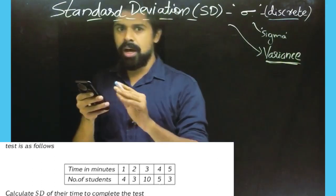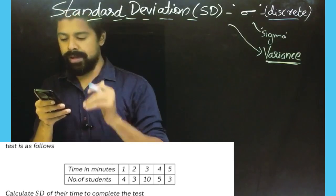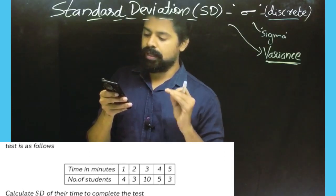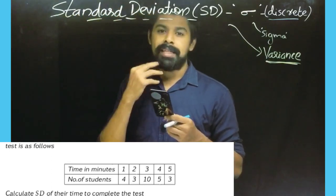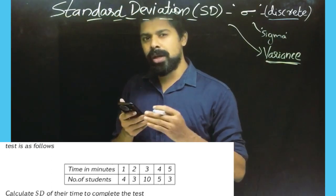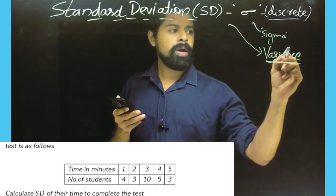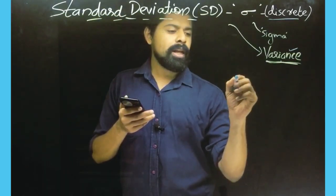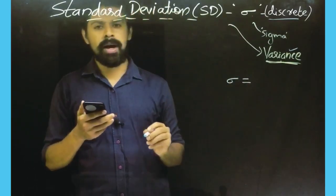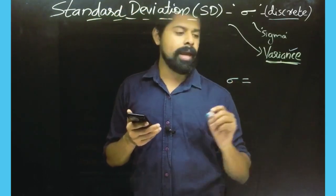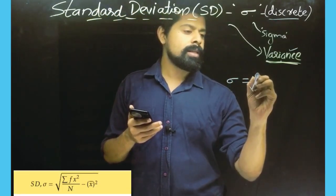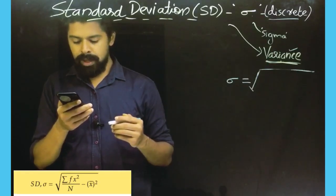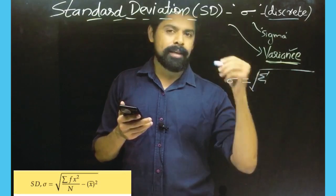We are learning about the standard deviation. We can calculate the standard deviation as the S.D. of their time to complete the test. Now, if you look at the standard deviation or the variance, you can see the variance. Let's do the formula. We denote the standard deviation as sigma. The formula is sigma equals the positive root of sigma fx² by n.